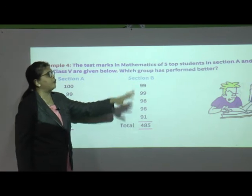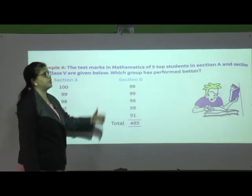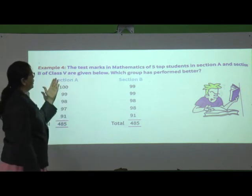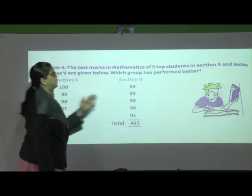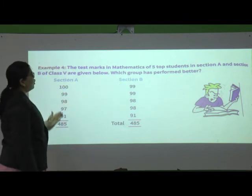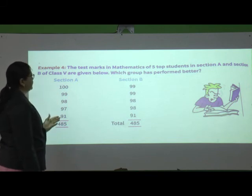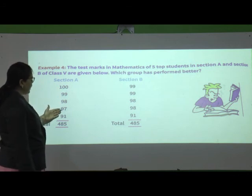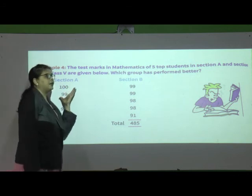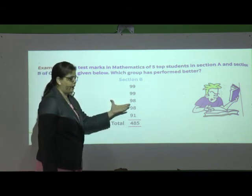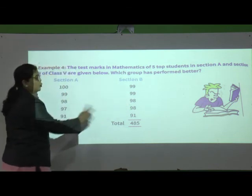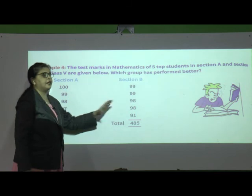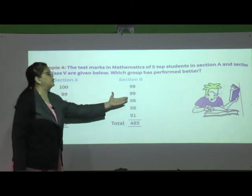We will see one example here. The test marks in mathematics of the top 5 students in Section A and Section B of Class 5th are given. Section A students got marks: 100, 99, 98, 97, 98. I want to compare which section has performed well. To compare, I will first find out the average. After that, can I go for individual marks? No, I cannot do the comparison directly.